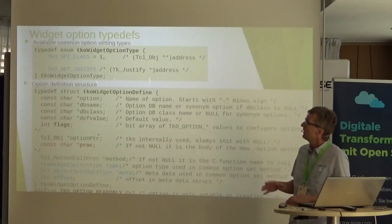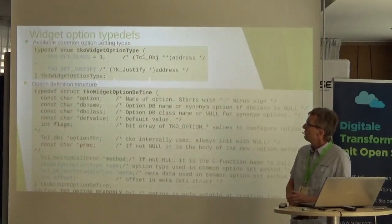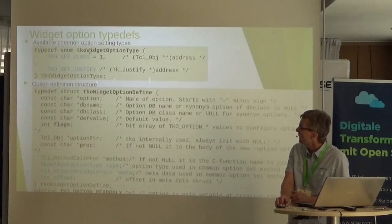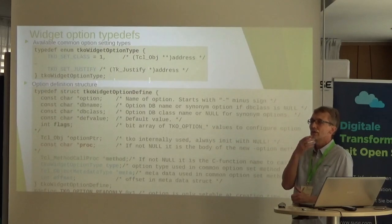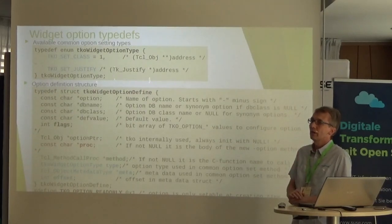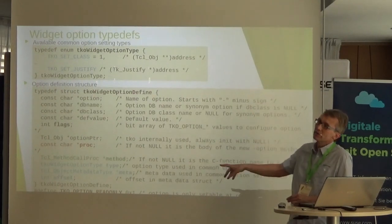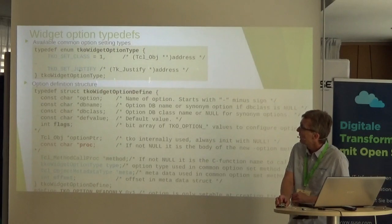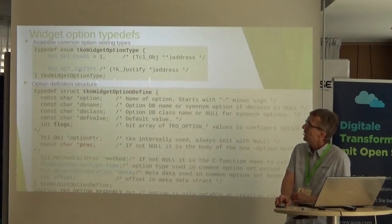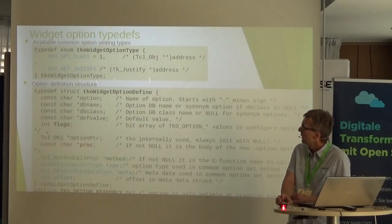On the C side, the common options use an enum, described in TIP 510 and in the TKO widget man page. For different types of options, enums are defined, and you can use these to make default actions. For each option, there is a structure holding the option, database name, database class, and flags.